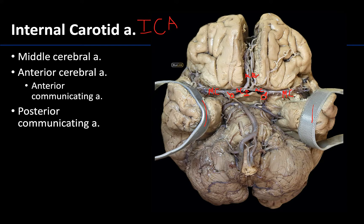The last branch of the internal carotid artery we want you to identify is another small communicating artery — the posterior communicating artery. You can see one here and the other one here. This artery connects the posterior cerebral artery with either the internal carotid artery directly, as you see in this image, or it can meet with the middle cerebral artery a little more laterally. The point is that it allows for communication between branches of the vertebral artery and branches of the internal carotid artery.